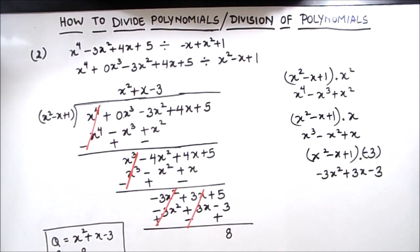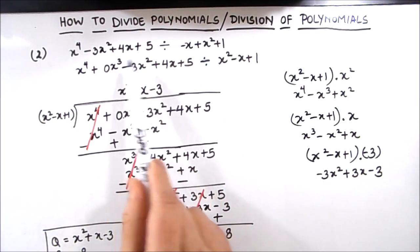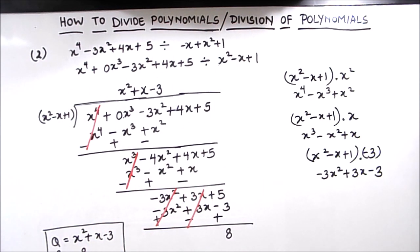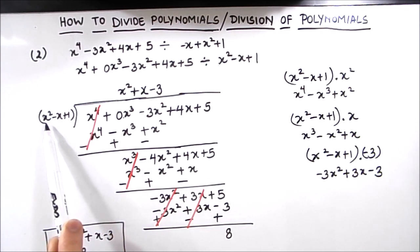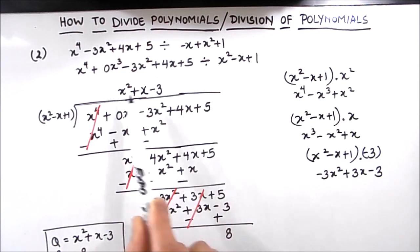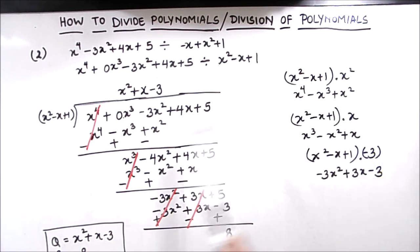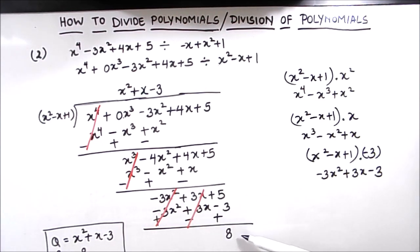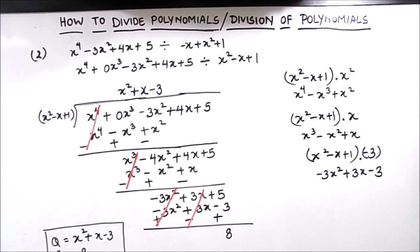So this is how you can divide polynomials. Let us revise the steps. First, arrange the terms of the dividend and divisor in decreasing order of their degrees. Second, divide the first term of the dividend by the first term of the divisor to obtain the first term of the quotient. Third, multiply all terms of the divisor by the quotient term and subtract from the dividend. Fourth, repeat until the remainder is 0 or its degree is less than the divisor. I hope this video is helpful. Please like and subscribe for more math videos. Thanks for watching.